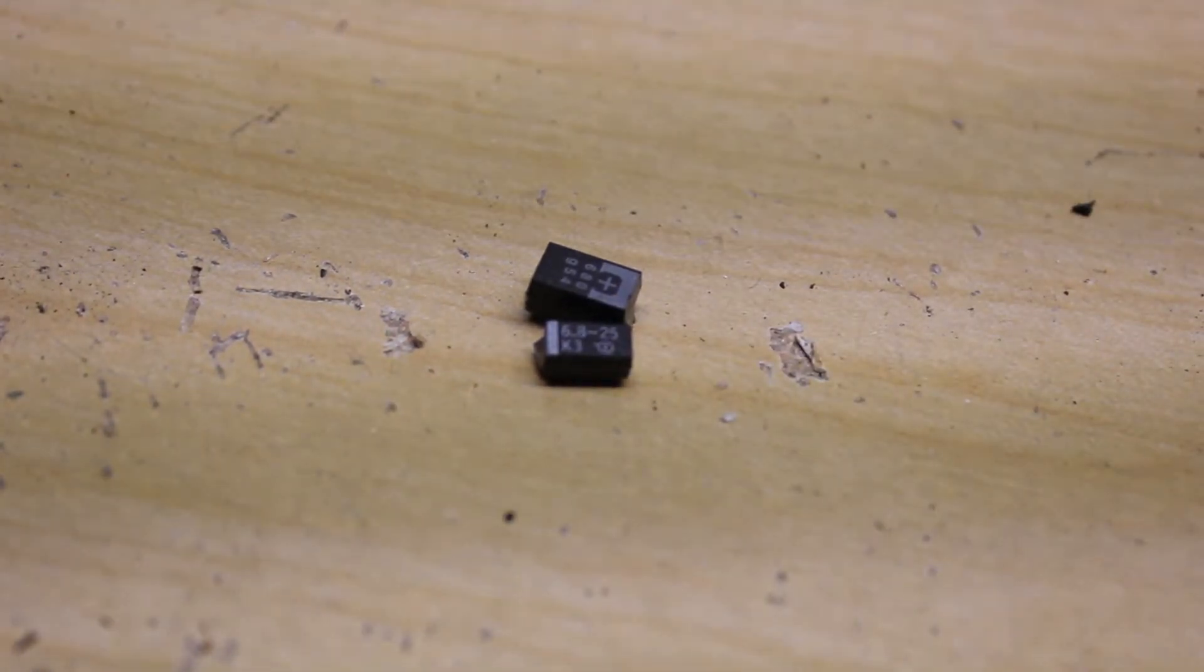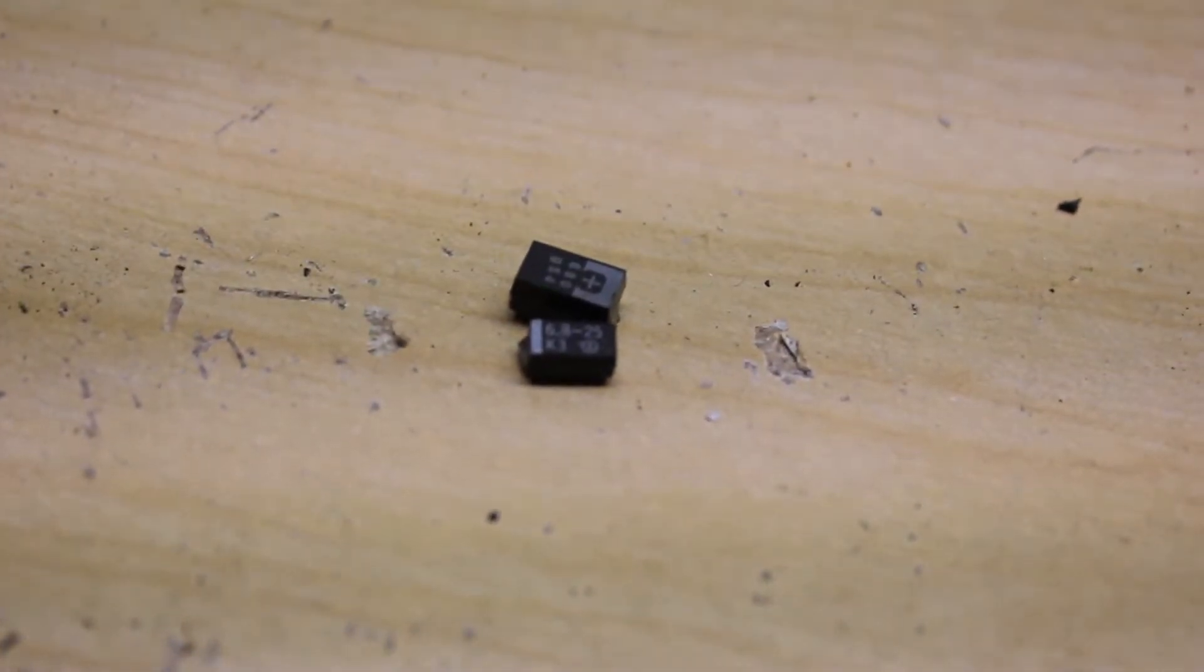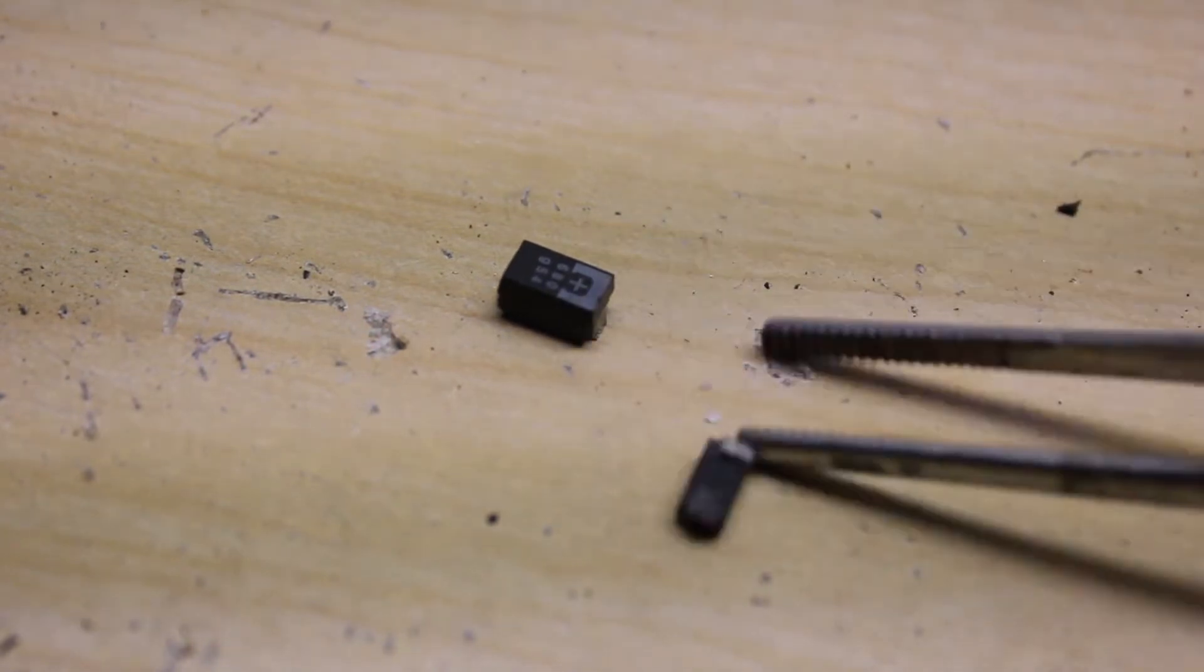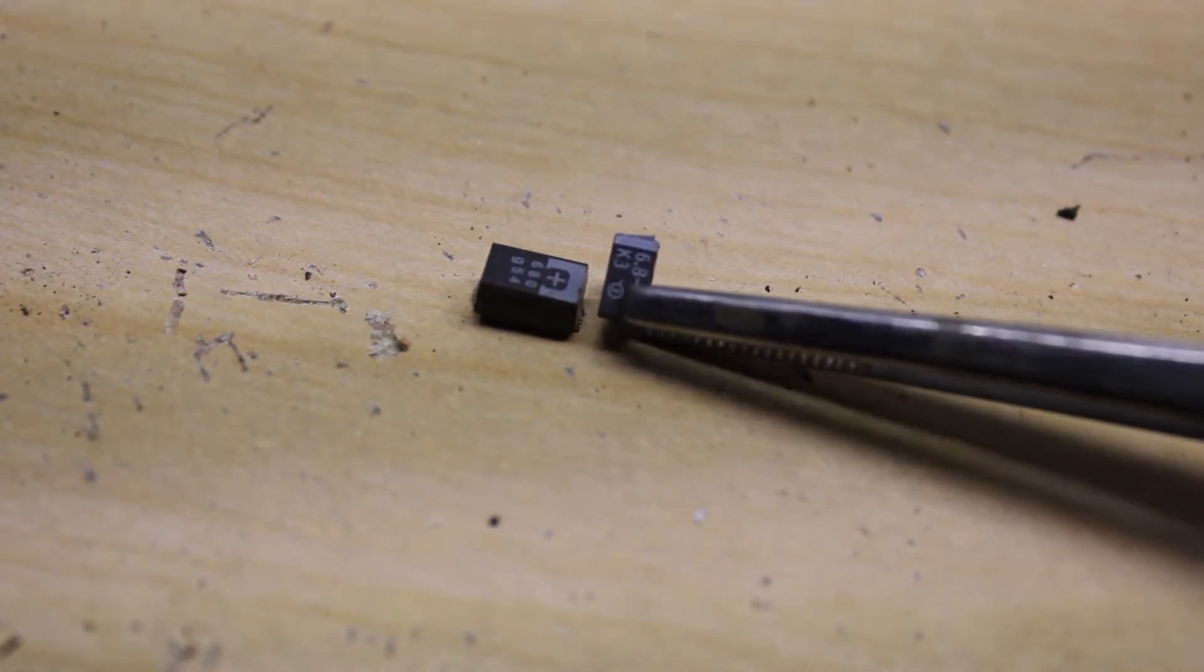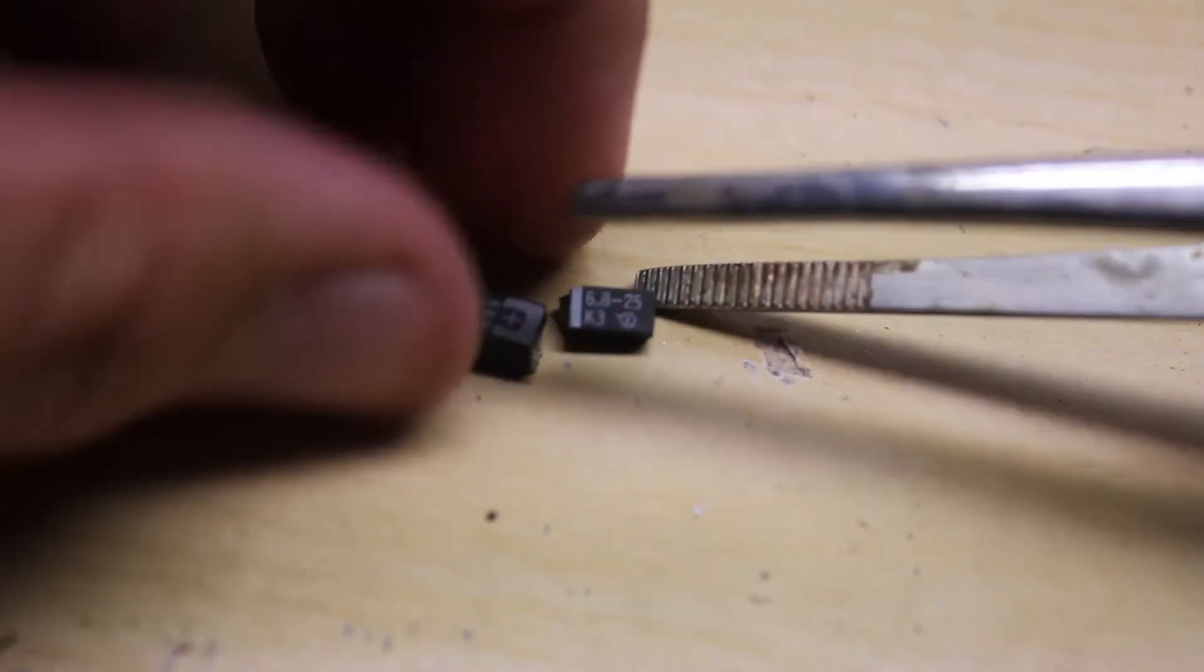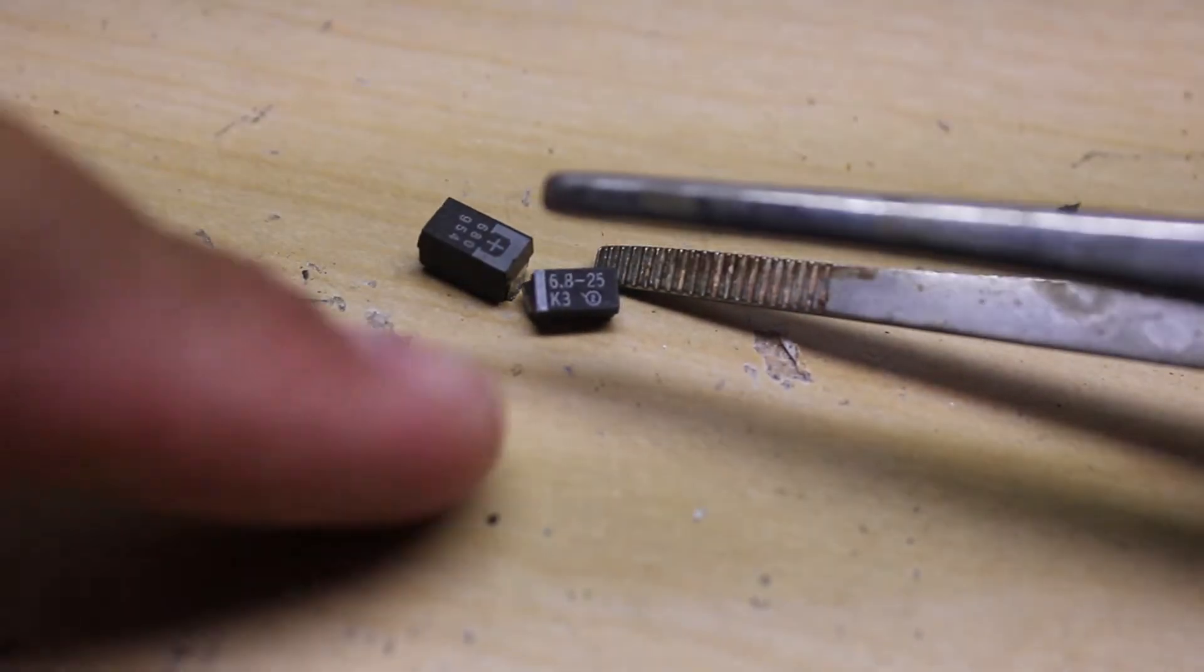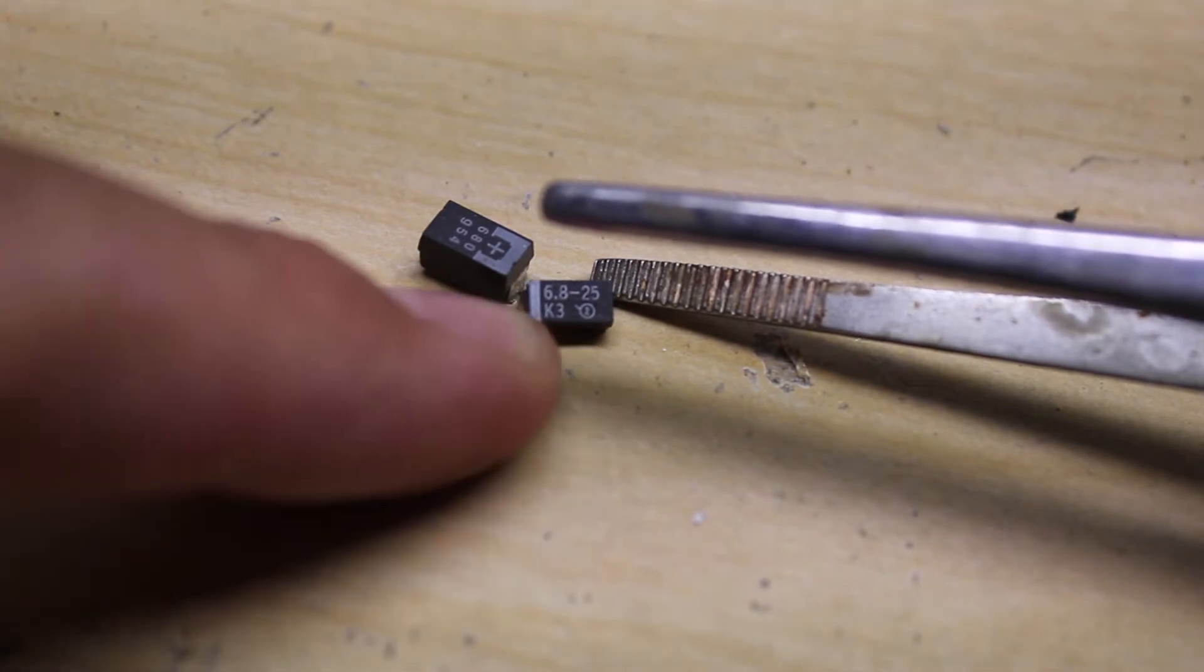Let me get something to point at them with. So like this one here, this very popular one, we all know this is a tantalum capacitor because it has that sign there, that circle and then the polarity.